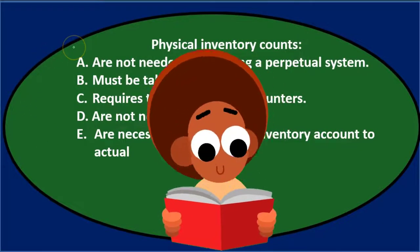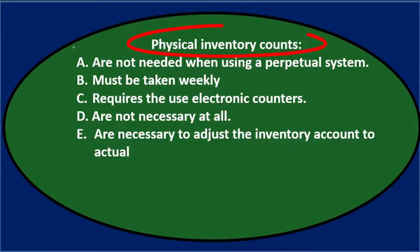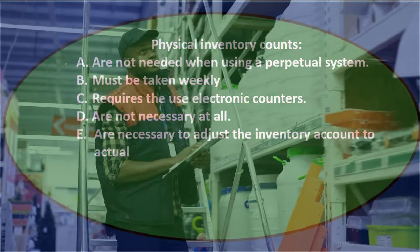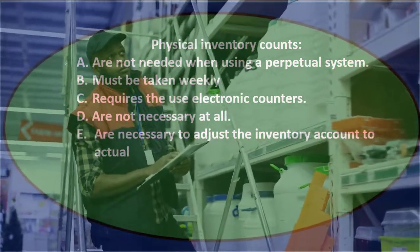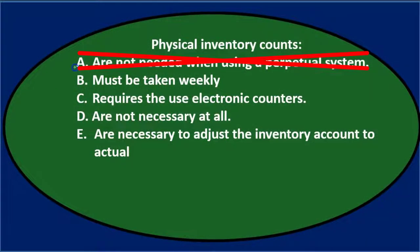We'll read this off and go through and see if we can eliminate some of the items. Physical inventory counts, A, are not needed when using a perpetual inventory system. This is the one they're probably trying to get you on the most. When we use a perpetual system as opposed to a periodic, the physical count serves a different purpose, but we still need one. The purpose for a perpetual system is to check for inventory loss, inventory shrinkage, inventory damage, spoilage, things like that. So that's not going to be it.